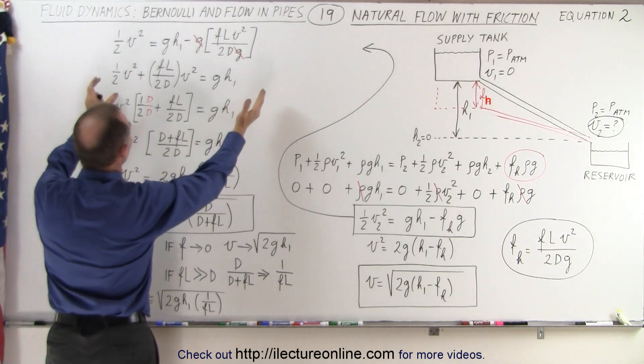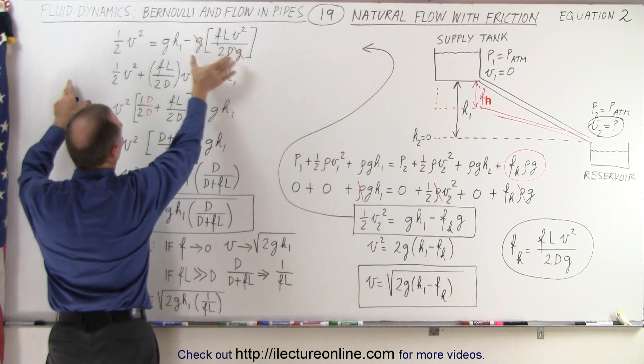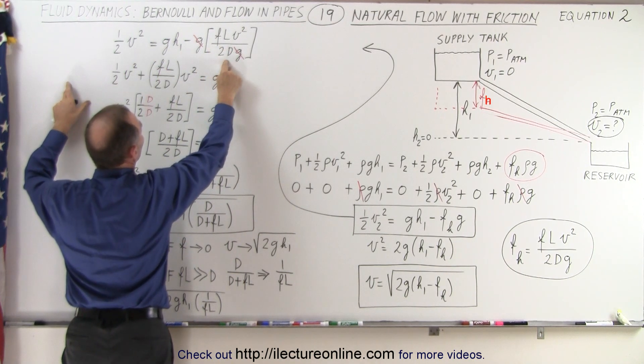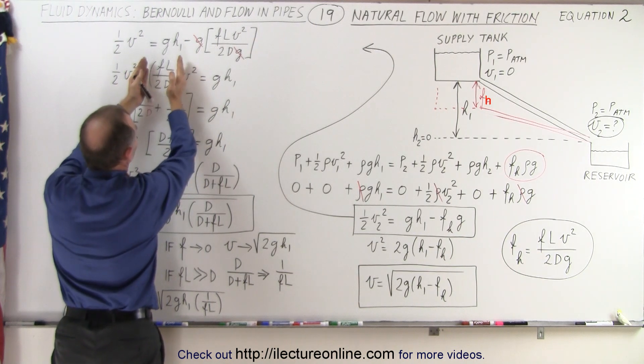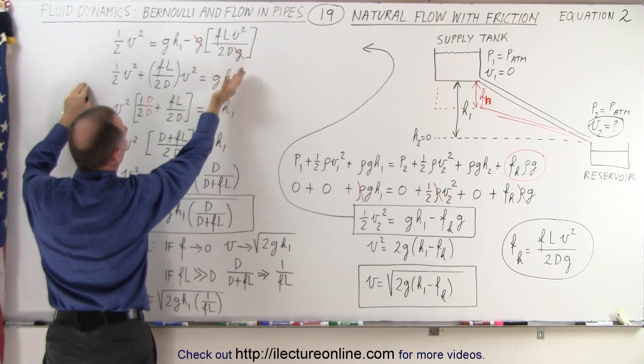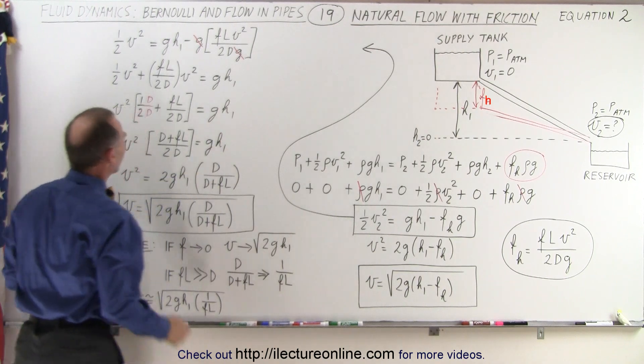So we want both terms with the v on the left side. So we take this term, move it to the left. So it's going to be fl divided by 2d times v squared. So fl divided by 2d times v squared on the left. On the right side we still have g times h1.